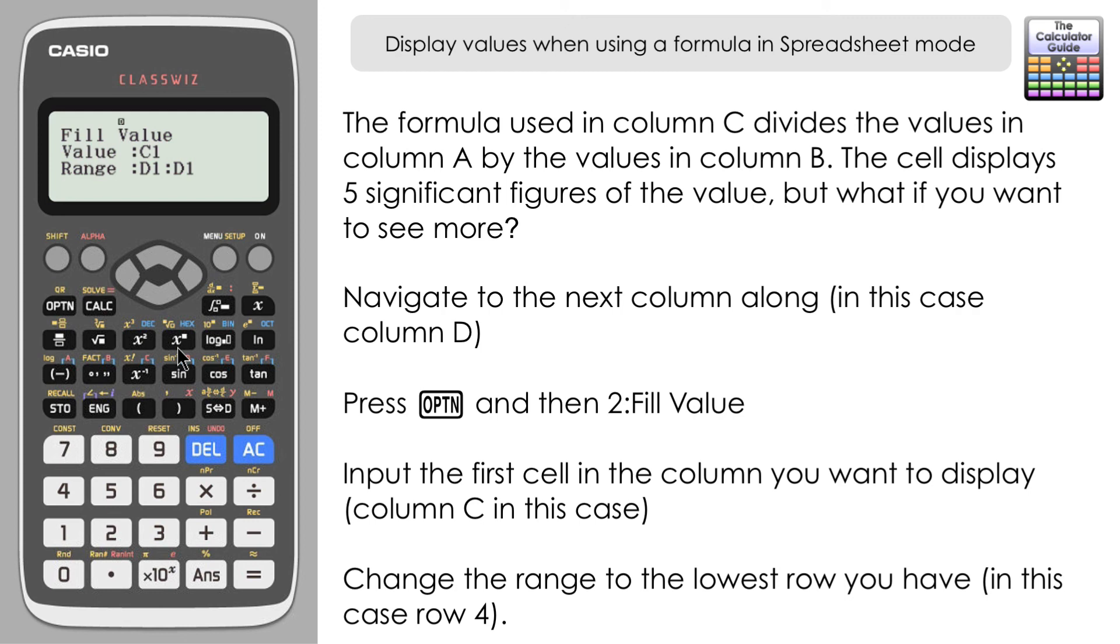I'm going to change the range because I want that to apply not just row one but to row two, three, and four. So I'm going to take that down to row D4, press equals, and you can see we've got the same values as row C but the calculator is just displaying the full value on our main working line there.